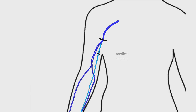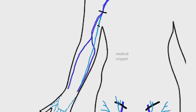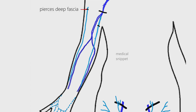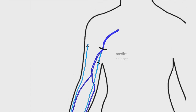The cephalic vein ascends along the anterolateral aspect of the forearm and passes in front of the elbow. In the arm, the cephalic vein ascends along the lateral border of the biceps muscle. Then it pierces the deep fascia at the lower border of the pectoralis major muscle, runs in the deltopectoral groove, then pierces the clavipectoral fascia, and drains into the axillary vein.